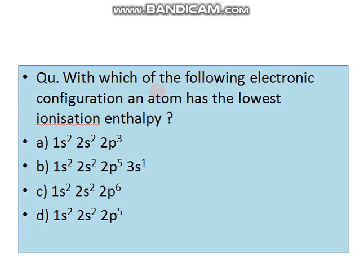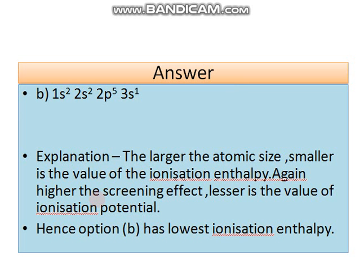With the following electronic configurations, which atom has the lowest ionization enthalpy? The options include configurations ending in 2p3, 2p5, 3s1, and 2p6. The 2p3 is half-filled and 2p6 is fully filled — both have higher ionization enthalpies due to extra stability. The 3s1 configuration has the loosest electron and will have the lowest ionization enthalpy, making it the easiest to remove an electron from.